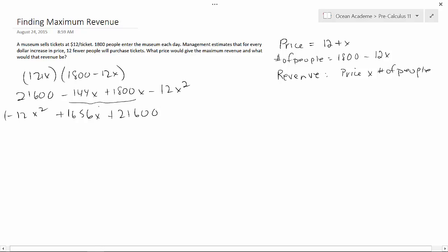Now we're just going to look at these first two. Let's factor out the minus 12. So that leaves us with X squared minus 138X. Now, it's minus because if we multiply minus 138 times minus 12, we get 1,656. Now, plus 21,600.